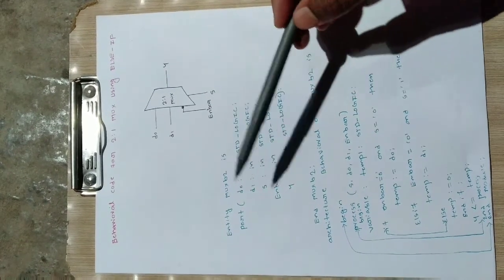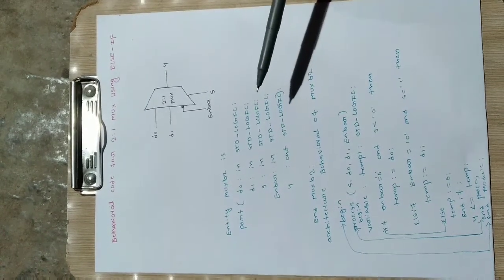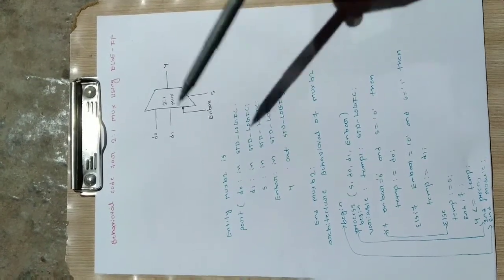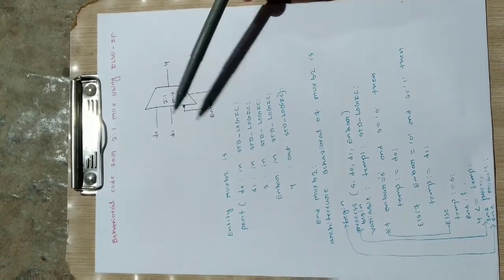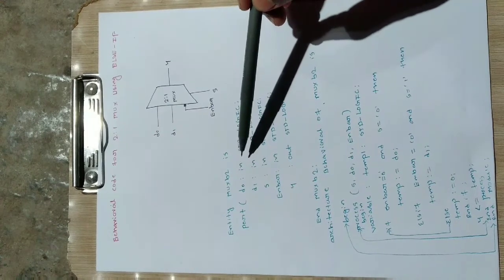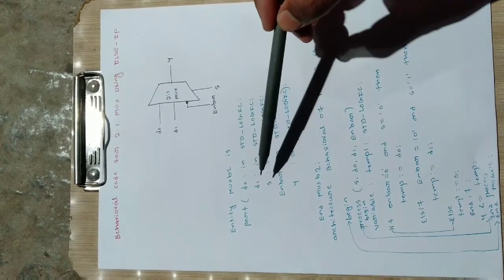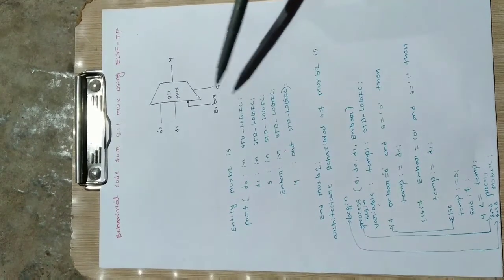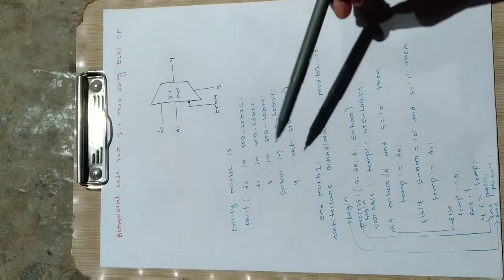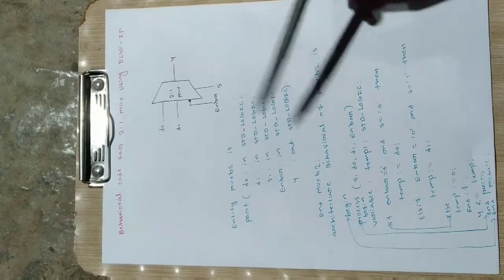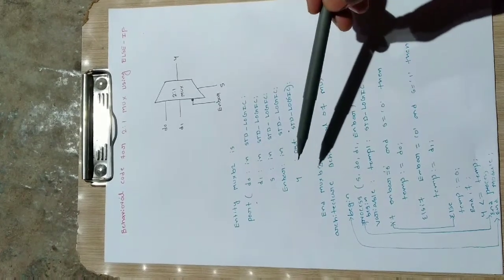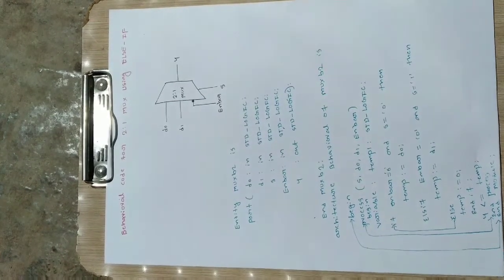The entity and end should be there — this is the format for defining inputs and outputs. We write port and an open bracket. D0 is an input, so we write: D0 colon in standard_logic. Similarly for D1: in standard_logic, again it is an input. Enable bar is also an input, so in standard_logic. But for Y, it is the output for this 2-to-1 mux, so Y: out standard_logic. Then close the bracket and put a semicolon.